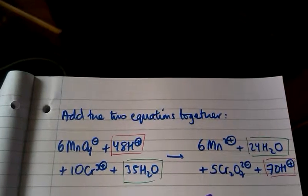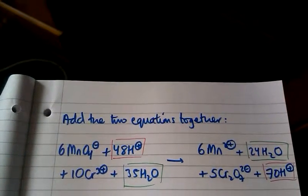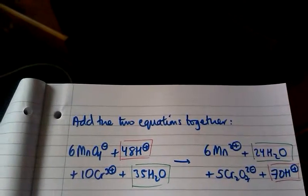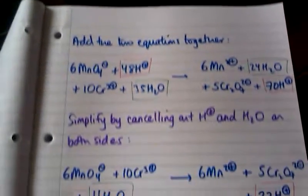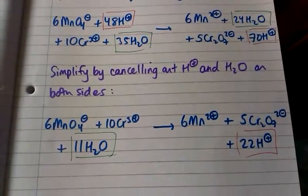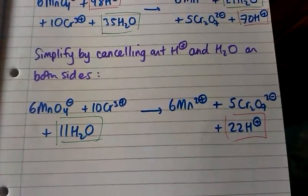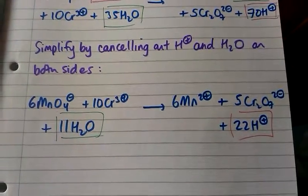Then if we take away 24 water from both sides, on the left hand side we have 11 water remaining. By doing that, this is our overall balanced ionic equation.